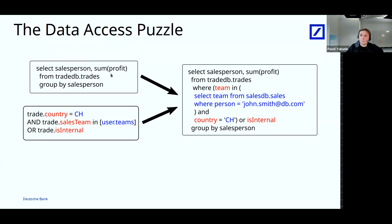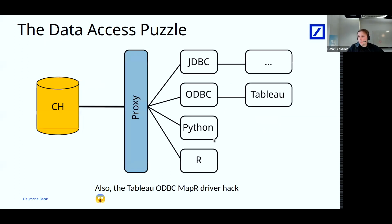For example, if somebody wanted the sum of profit grouped by salesperson but is only allowed to see Switzerland trades and only for teams where she is a member, our system modifies the query transparently so she only sees what is allowed. Technically, we built a proxy that is transparent for existing ClickHouse clients — JDBC, ODBC, Python, R — but modifies queries on the fly. So a query from Tableau goes through ODBC, the proxy modifies it, it goes to ClickHouse, and the response is transparently returned to Tableau.